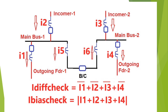For the check zone, i_diff_check is the vector sum of all currents flowing towards and outside the bus — i1 (outgoing feeder one), i2 (incomer one), i3 (incomer two), and i4 (outgoing feeder two). The bias current for the check zone is the scalar sum of these four currents.